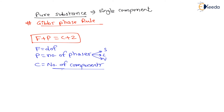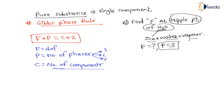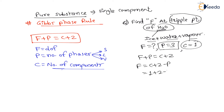Question 1: Find the degree of freedom at the triple point of water. At the triple point, water exists in three phases: ice plus water plus water vapor. Since the triple point of water is a pure substance, the number of components C = 1. Applying Gibbs phase rule: F = C + 2 − P = 1 + 2 − 3 = 0. Therefore, the degree of freedom at the triple point of water is zero.